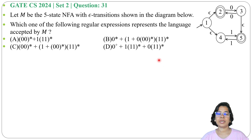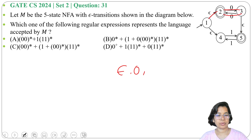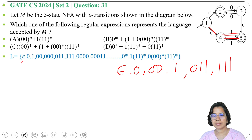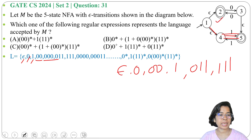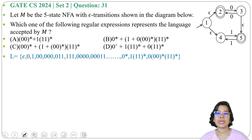Four regular expressions are given. Let's analyze which strings are accepted by this epsilon NFA. It will accept epsilon, then single 0, then by epsilon it will rise to final state 5, so it will accept single 0, then epsilon 0 0 so two 0s, then epsilon single 1, then 0 1 1, so 0 followed by two 1s, and three 1s. So it will accept any number of 0s — even number of 0s accepted by state 2, whereas odd number of 0s accepted by state 5.